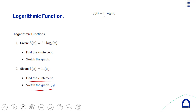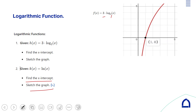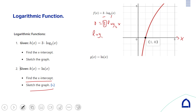For this practice example, a = 3 and the base is 2, which is greater than 1, so we have logarithm growth. To find the x-intercept, set y = 0. Since b^0 = 1 for any base, x must equal 2^0 = 1, using the inverse relationship between logarithm and exponential functions.